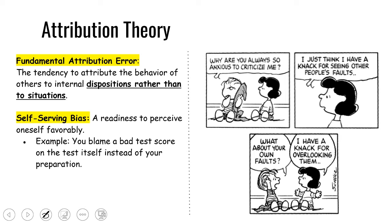Finally, the self-serving bias — it's kind of the opposite of the fundamental attribution error. It's where when we look at something we did, an action we took or something we said, we personally like to look at the situation and blame it on the situation. For example, if you do really poorly on a test, you don't say 'this is just me not doing my homework and not keeping up with studying.' Instead you say 'I didn't sleep because I had to study for a different test,' or 'that teacher is horrible at explaining things.' Self-serving bias is looking at your own personal actions in a favorable way and blaming things on the situation.